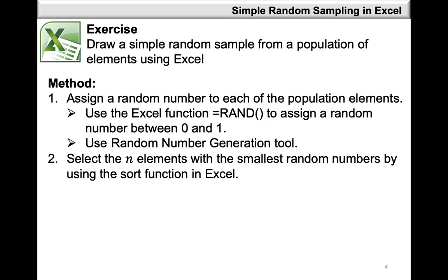The first step is to assign a random number to each population element. You can make use of the RAND function in Excel that assigns a random number between 0 and 1, or the Random Number Generation tool found in the Data Analysis Toolpak. If you make use of the RAND function, be sure to fix these values by clicking on the Formula tab at the top of your Excel sheet, clicking on Calculation Options, and selecting the Manual option so that your random numbers do not keep changing whenever the worksheet is recalculated.